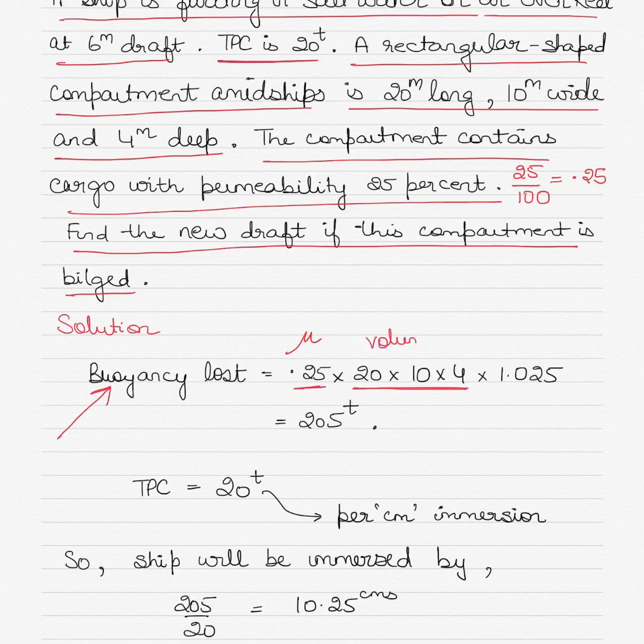This is the volume of the bilged compartment multiplied by the density. So whenever we multiply volume by density, we are getting some kind of a weight. We are basically calculating the weight of the water that has entered the compartment. Now in the previous example of permeability we didn't do that because we were not given the information. When you start seeing TPC in the question, it means that now you have to find out how much weight has entered the compartment.